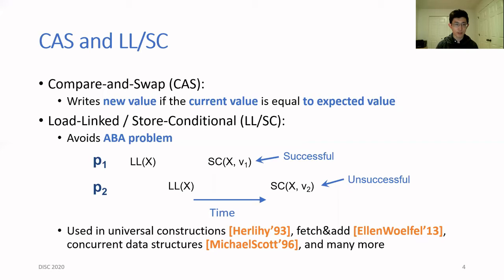LL/SC performs a similar function to compare-and-swap, except it avoids the ABA problem. The LL operation behaves like a read and simply returns the current value of the object. An SC operation by process P will succeed only if there has not been a successful SC on the same object since the last LL by process P.